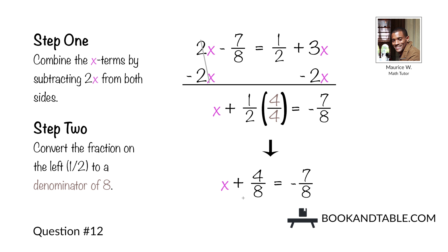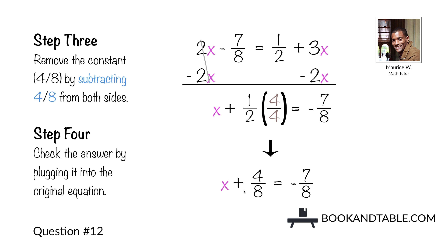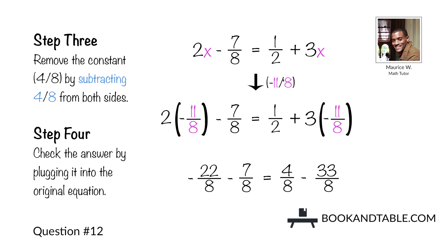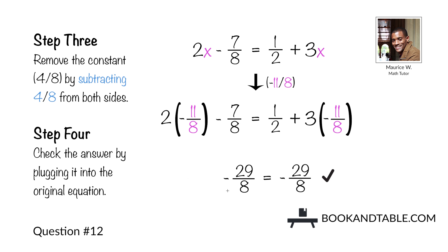Step three: remove the constant 4/8 by subtracting 4/8 from both sides. That leaves you with x is equal to negative 7/8 minus 4/8, which is negative 11/8. Step four: check the answer by plugging negative 11/8 into the original equation in both places where you see x. 2 times negative 11 is negative 22 over 8. On the right side, 4 minus 33 gives negative 29 over 8, and negative 22 minus 7 also gives negative 29 over 8. The answer to question number twelve is x is equal to negative 11/8.